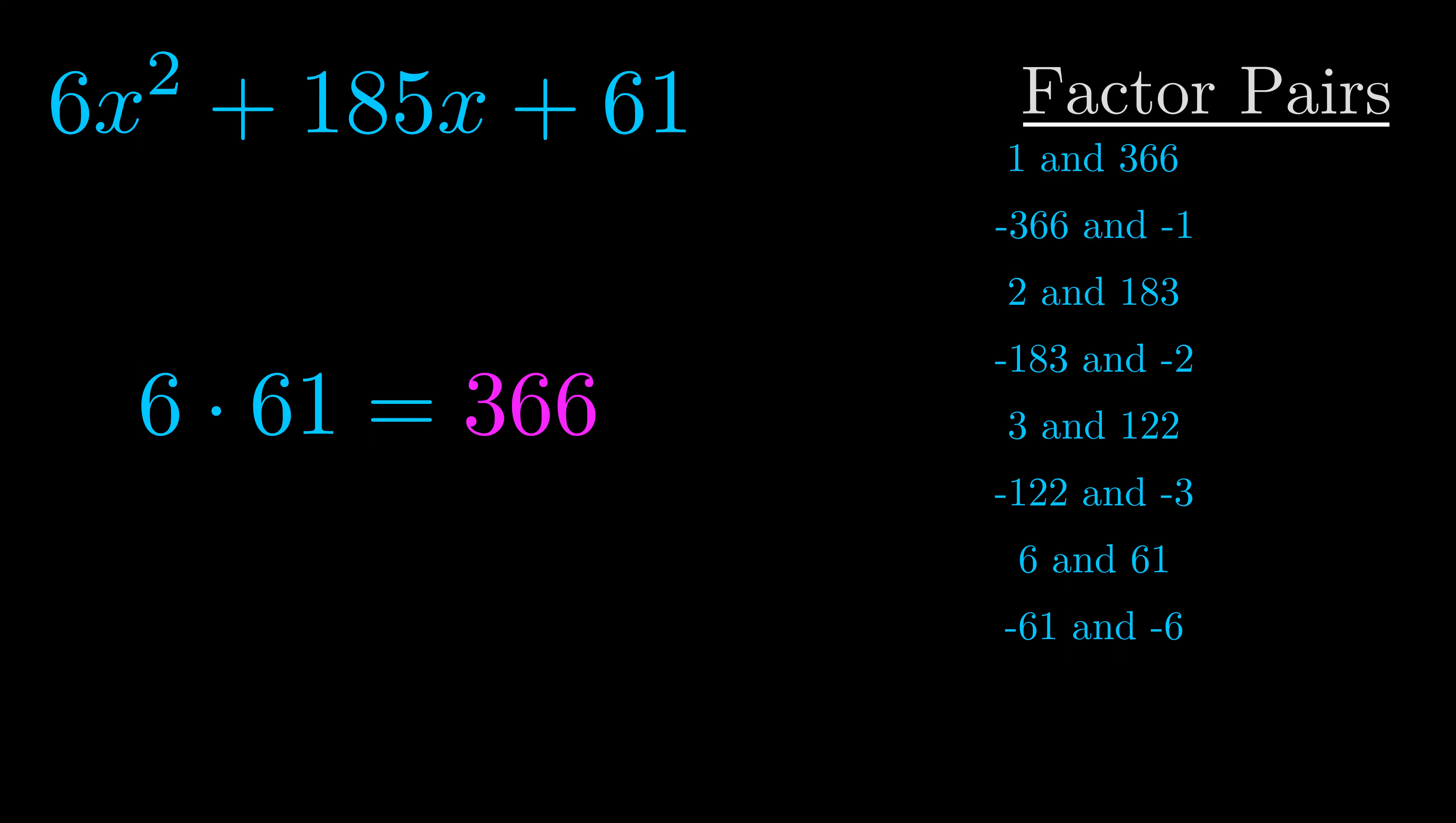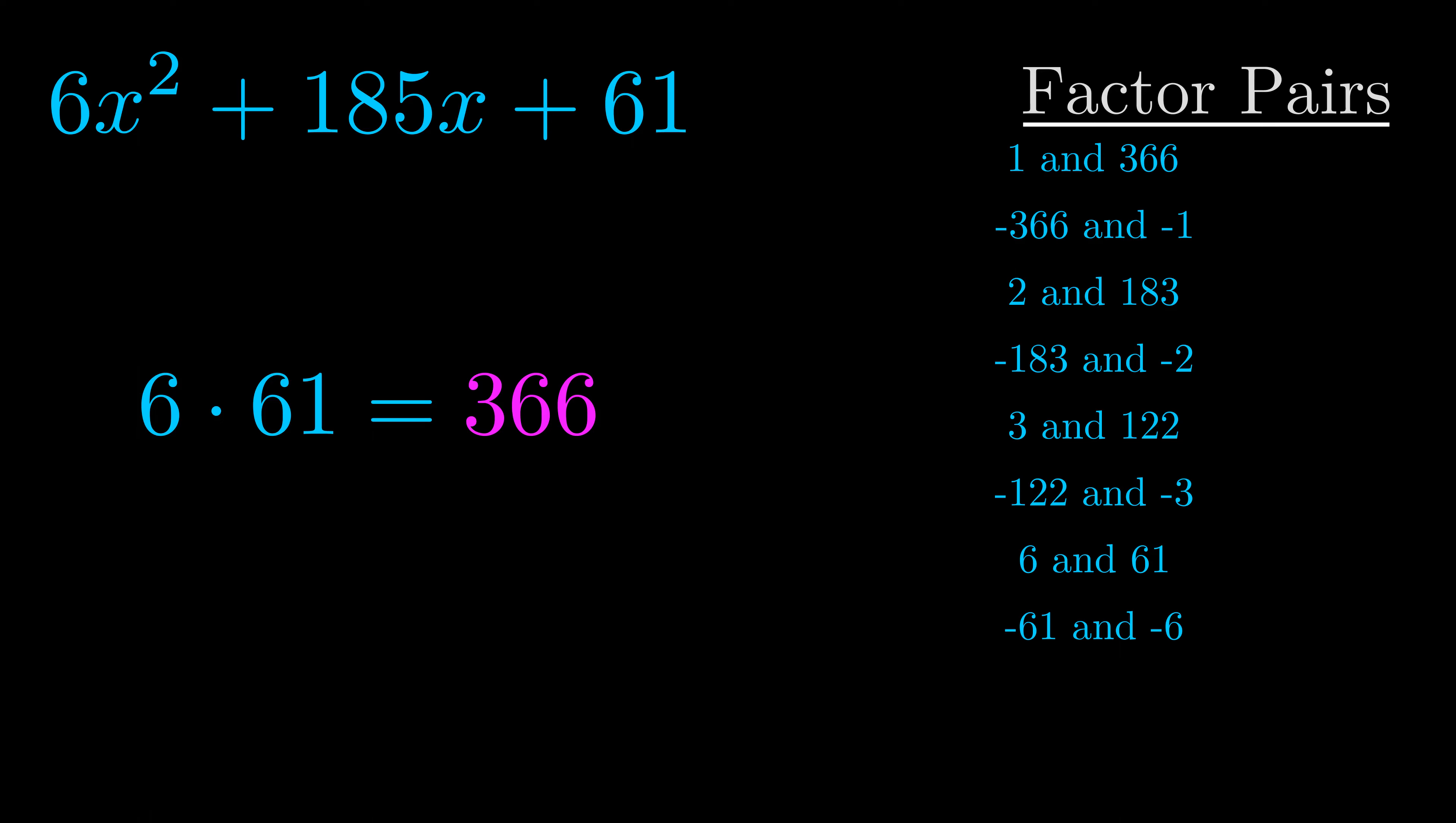Now once you have these factor pairs the goal is to find which of these pairs adds to the b value. The b value is the coefficient on the x term. That's the middle term, the one that we haven't done anything with yet. And really this is the only factor pair that we need.